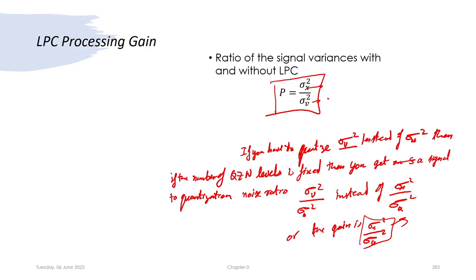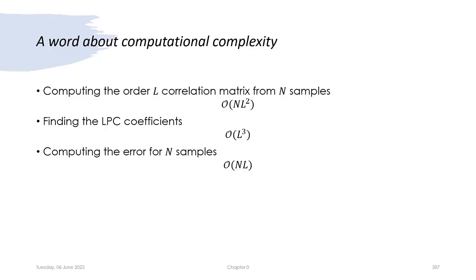This improves with the smaller innovation process variance or the more quantization levels that you use. Let us quickly look at the computational complexity. We can calculate the order-L correlation matrix from N samples using order of N times L squared flops, and the LPC coefficients can be found using order of L cubed floating point operations. The overall computational complexity of linear predictive coding is order of N times L squared plus L cubed.